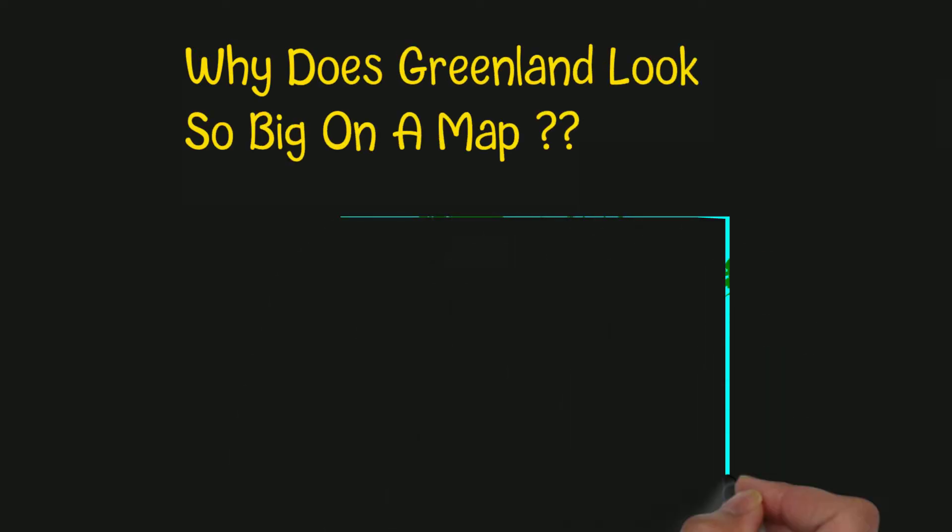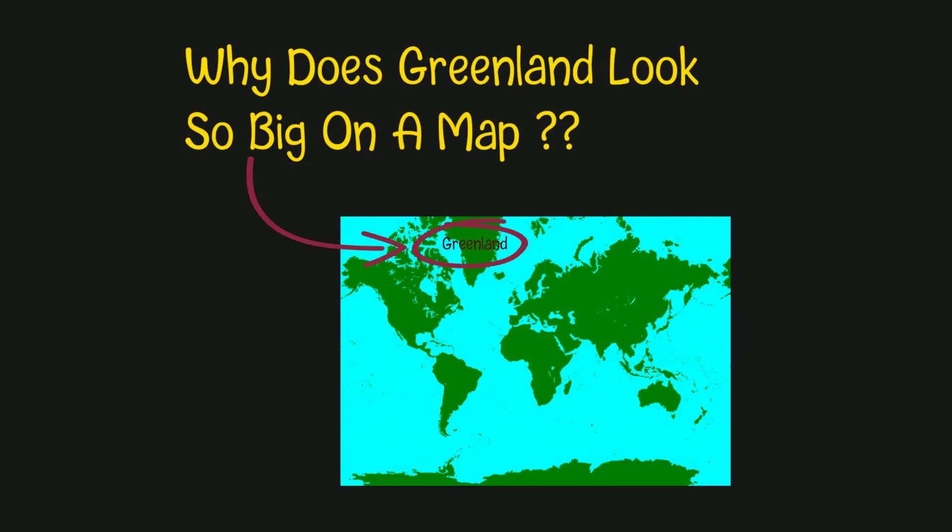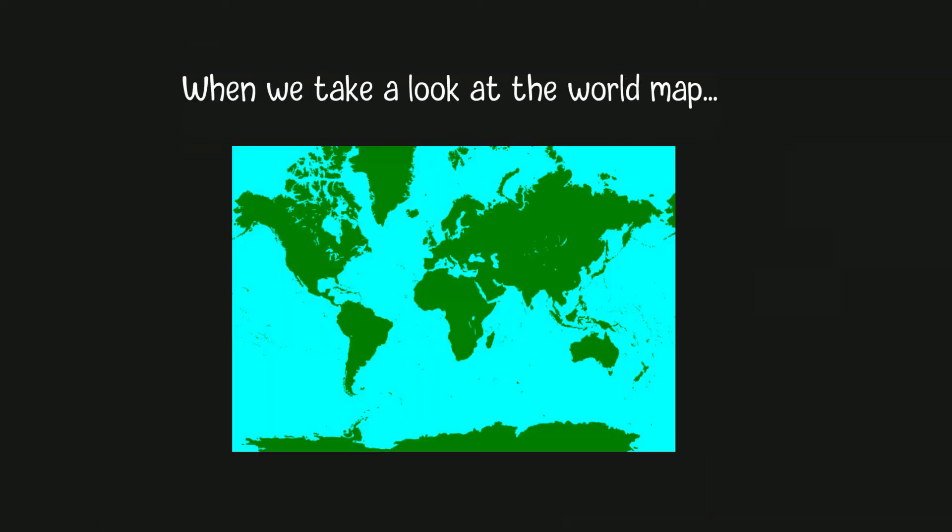Why does Greenland look so big on a map? When we take a look at the world map, we can see that Africa looks tiny, and Greenland and Russia appear to be very huge.